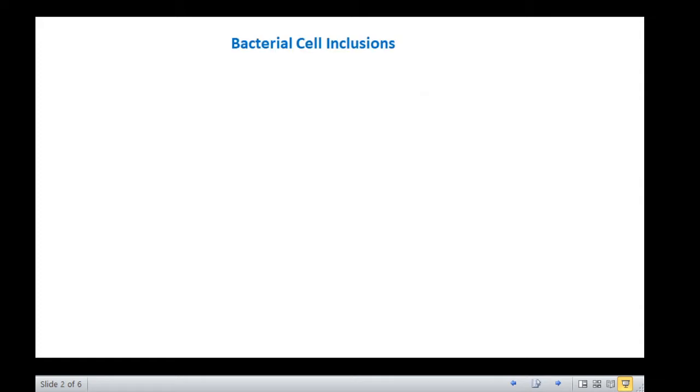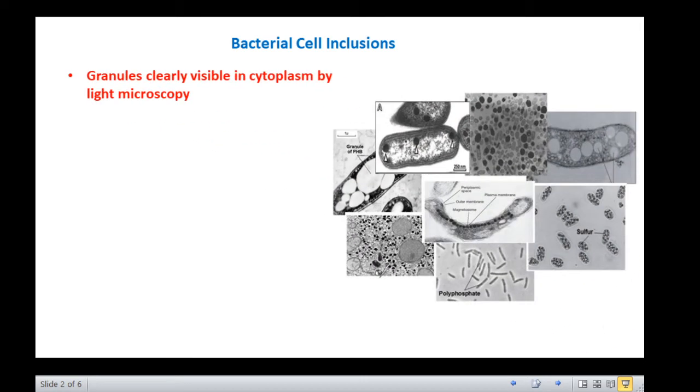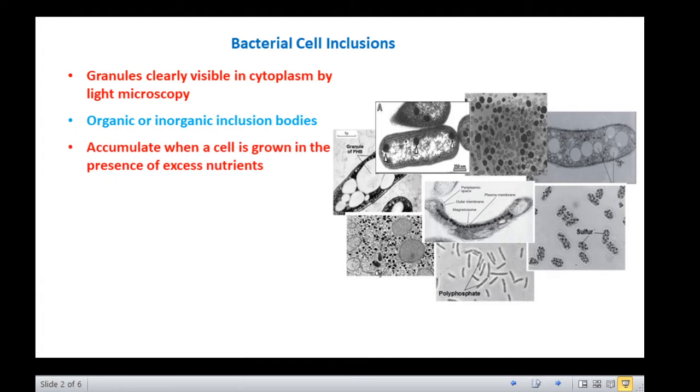A number of inclusion bodies and storage granules are clearly visible in cytoplasm by light microscopy. These are either organic inclusion bodies like glycogen granules, polyhydroxybutyrate granules, cyanophycine granules or gas vesicles, or inorganic inclusion bodies like polyphosphate granules, metachromatic granules and magnetosomes. Inclusions accumulate when a cell is grown in the presence of excess nutrients. Normally, inclusion bodies are involved in storing energy reserves or building blocks for the cell. These inclusion bodies may or may not be membrane bound.